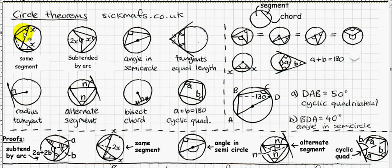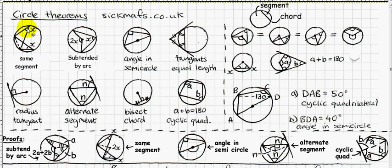Here's our first rule: angles in the same segment are equal. A segment is separated by a chord, which is simply a straight line. These two angles are in the same segment — there's a tiny segment there and a large segment there.